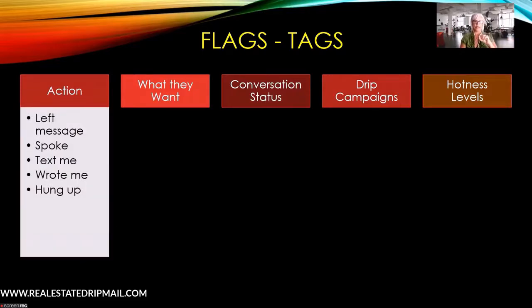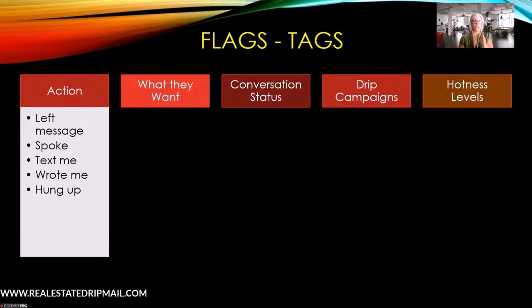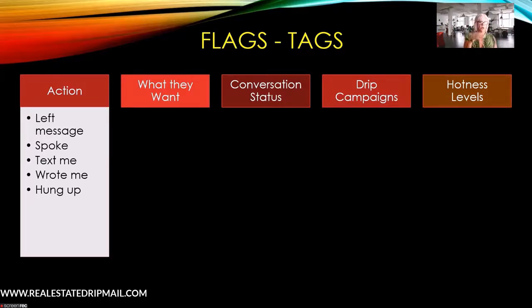I'm going to show you my flags when we get into my account in the live action portion. I would have flags with these categories, and if you start the flag name with the word 'action,' they'll all group together alphabetically. That way you can fly over to the action area — they're all stacked up in a row — and just pick the one you want instead of searching all over a long list.